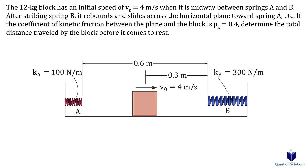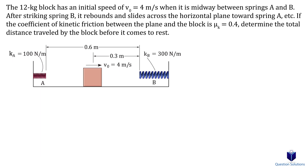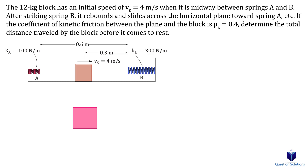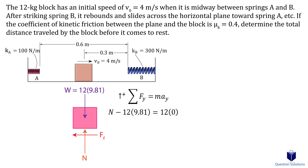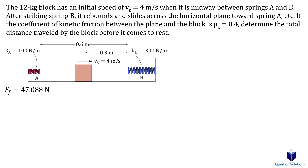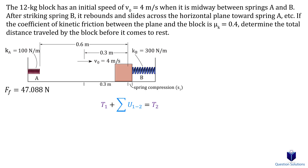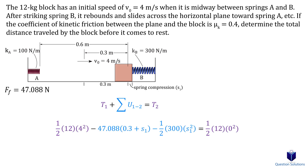We start by figuring out the frictional force. Drawing a free body diagram of the block, we have the normal force, weight, and frictional force. Writing an equation of motion for the vertical direction, we solve for the normal force and calculate the frictional force. The block slides toward spring B, compresses it, and stops. Our first goal is to find how much the spring compresses, because the total distance the block travels is 0.3 meters plus the spring compression distance.